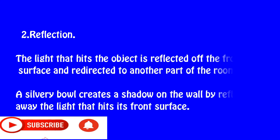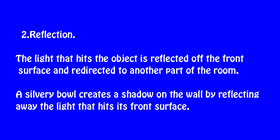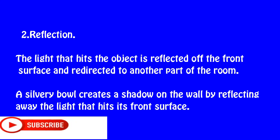Another way is reflection. Reflection can prevent light from going in the forward direction. The light that hits the object is reflected off the front surface and directed to another part of the room. A silver ball creates a shadow on the wall by reflecting away the light from its front surface.